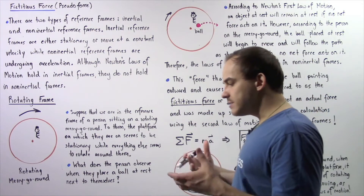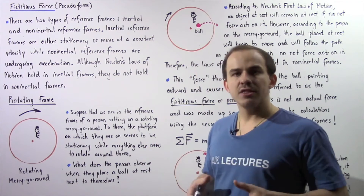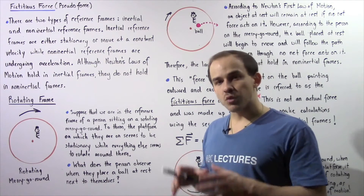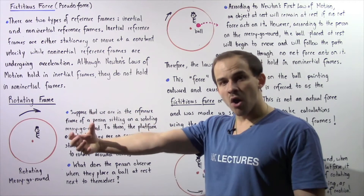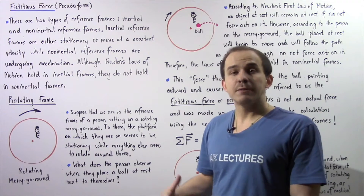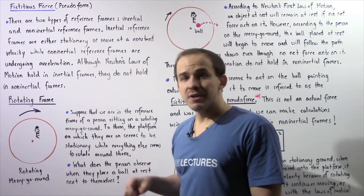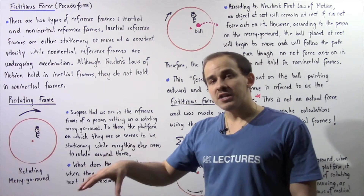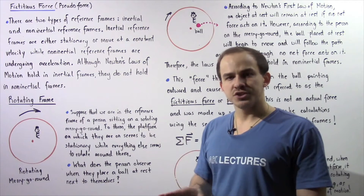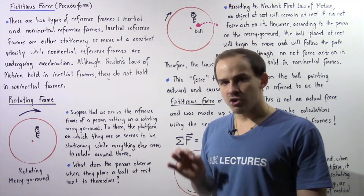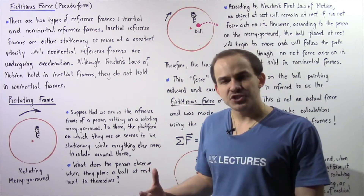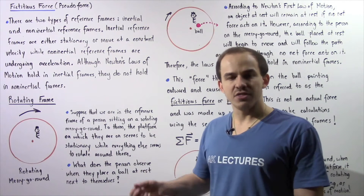Let's imagine we are the person sitting on that rotating merry-go-round. To us, that platform seems to be at rest. So if I take a ball and place it at rest onto that platform, that ball — at least according to that person — is initially at rest. Now once we release that ball, what should that person observe? Well, if Newton's first law of motion actually holds, that ball should not move anywhere, because if an object is initially at rest and no net force acts on it, that object should remain at rest.